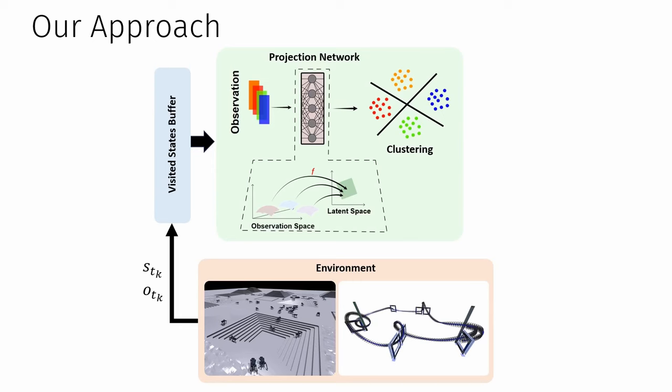The stored observations are then mapped to an embedding space with a learned projection, grouping together states with similar task-relevant experience. Each embedding of the visited states is then clustered according to their proximity in the embedding space into different clusters.